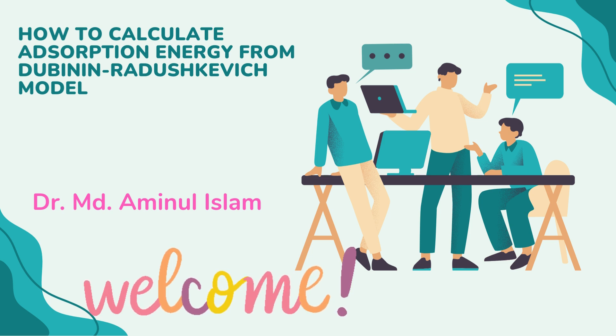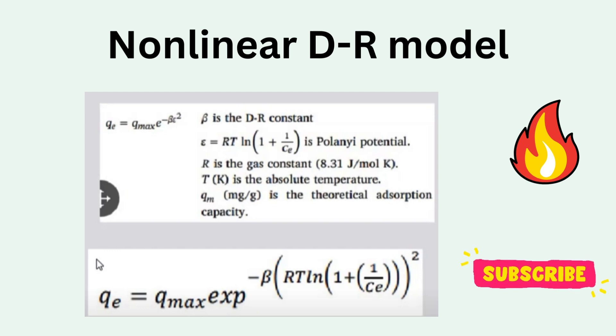Well, let us proceed. Here is the non-linear Dubinin-Radushkevich model, or DR model, where Q equals Qm e to the power minus beta epsilon squared, where beta is the DR constant, epsilon equals this, R is the universal gas constant, T is the absolute temperature, and Qm is the maximum adsorption capacity.